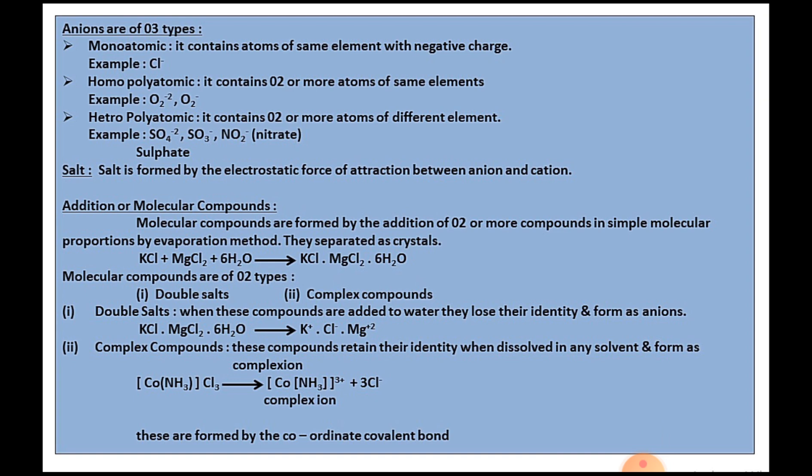Heteropolyatomic anion contains two or more atoms of different elements. Example: SO4 2- in sulfate ion, sulfur is present one time, oxygen present four times. Even in SO3 2- sulfite, sulfur is present one time, oxygen present three times.